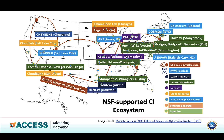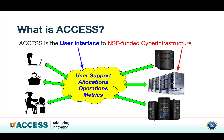This map shows the scattering of these cyber infrastructure resources around the United States. I'll encourage you to pause the video here and look at them. ACCESS is the user interface between users and those cyber infrastructure resources, no matter where they are in the United States. ACCESS has four different areas: user support, allocations, operations, and metrics.